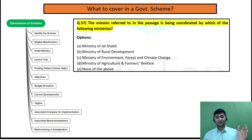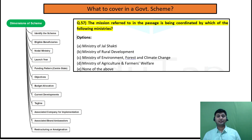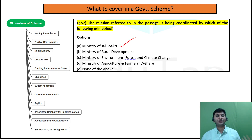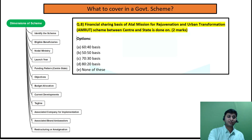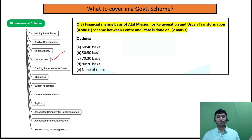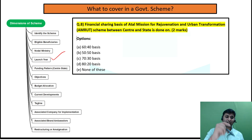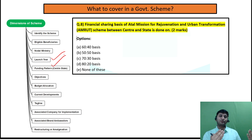Next is nodal ministry. For example, in the 2019 exam there was a question on Jal Shakti Abhiyan, asking which ministry is basically coordinating this scheme — the answer was Ministry of Jal Shakti. So the nodal implementing ministry can be asked in the exam. Next is launch year — they might ask in which year a particular scheme was launched.